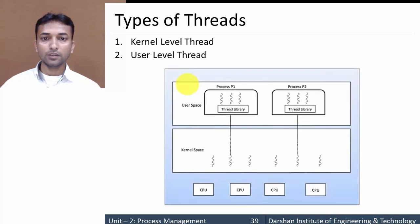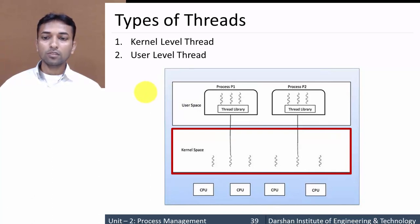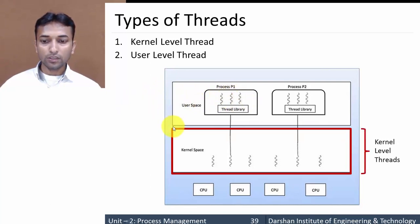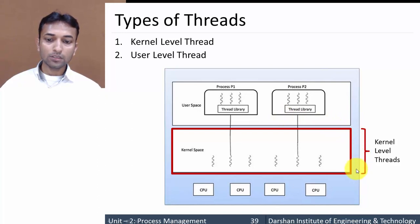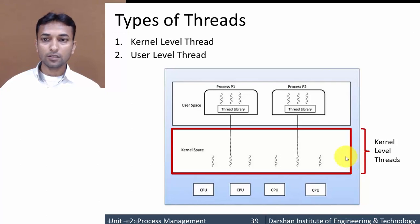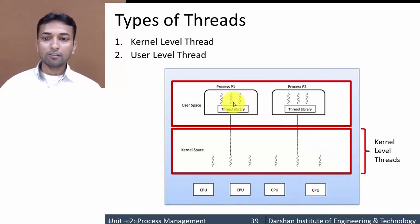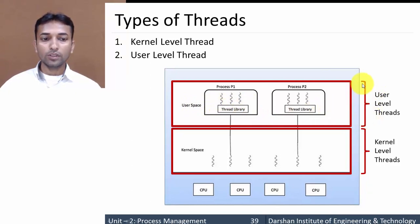Let us consider this figure. Kernel level threads are threads which are created by a process within kernel space. Here, this one is kernel space and this one is user space. The threads created within kernel space are known as kernel level threads, whereas threads created within user space are known as user level threads.